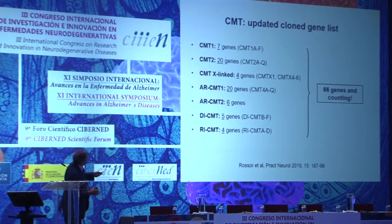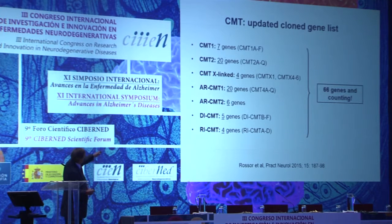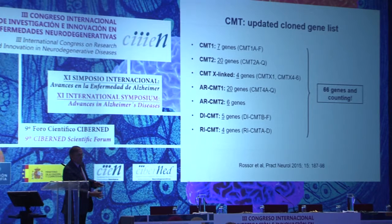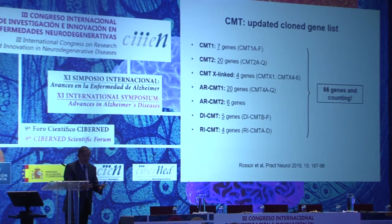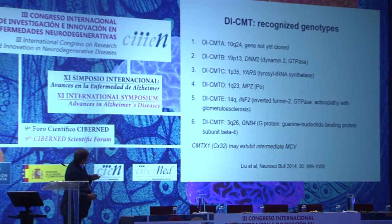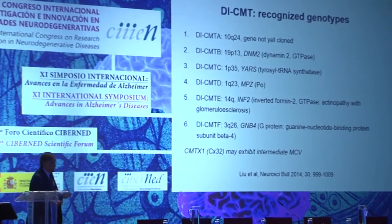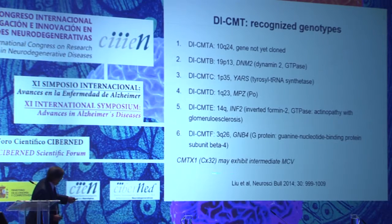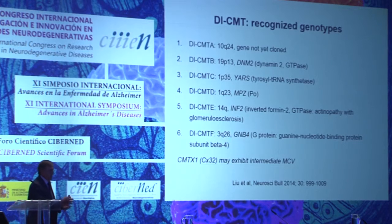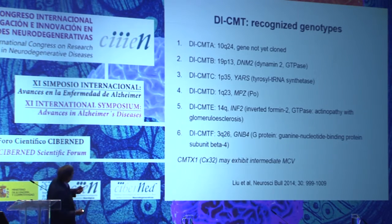This is the present panorama of CMT. The total is 66 genes and counting. We are adding CMT1 A to F, for example, in chronological order of the discoveries of the genes. It is ironic that this apparently simple disease is probably one of the most genetically complex disorders. Concerning dominant-intermediate CMT, there are six loci.